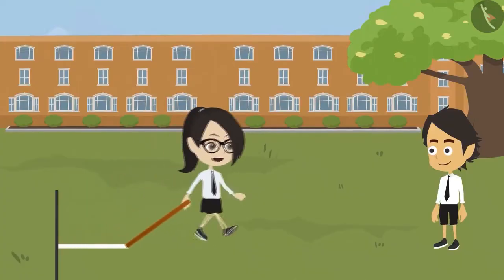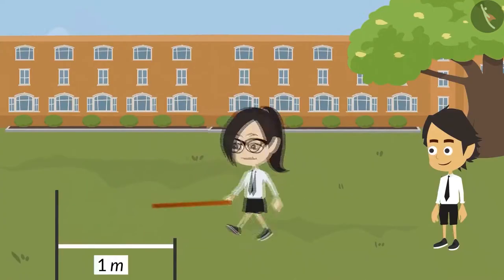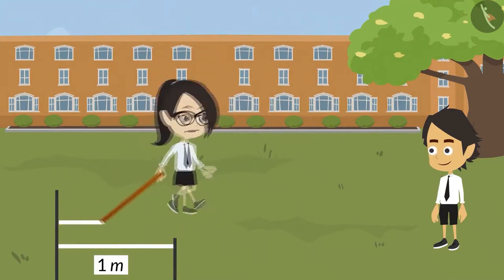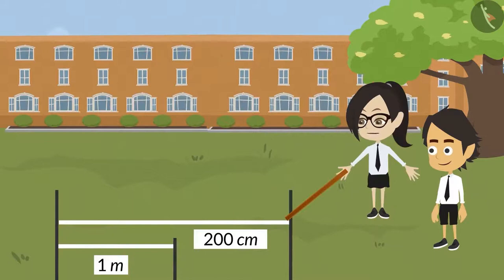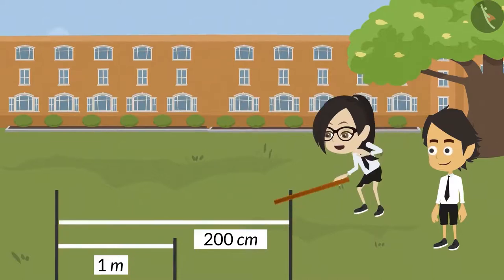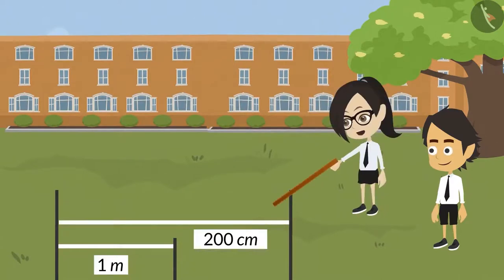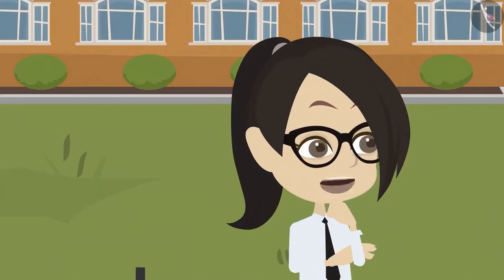First, I will draw a line of 1 meter. Now I will make a line of 200 centimeters. Hey! The centimeters line turned out to be longer. That means a value written in centimeters can be longer than one written in meter. I am confused. Now you explain.